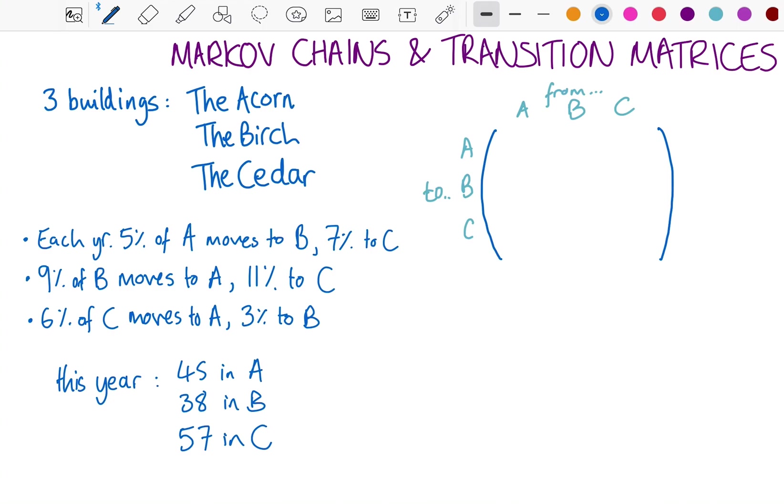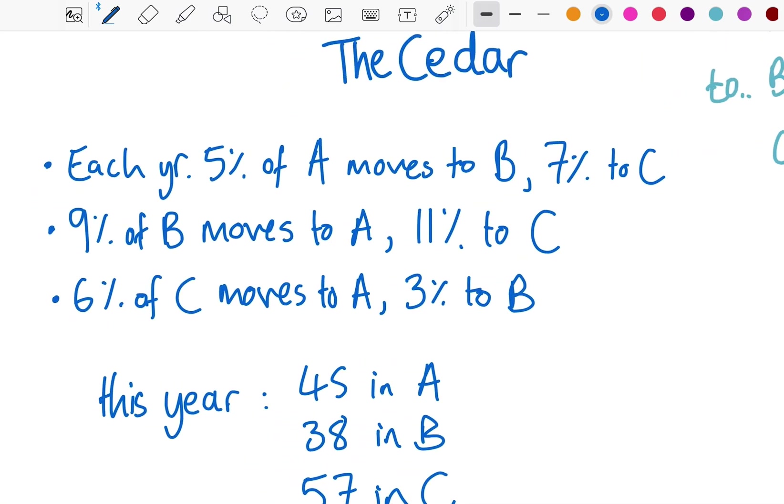The teachers can move freely at the end of each year if they want to change buildings. Now, it is seen that at the end of each year, 5% of the people in building A move to building B, 7% move to C. 9% of people in the Birch move to the Acorn, and 11% move to the Cedar. 6% of C move to A, 3% of C move to B.